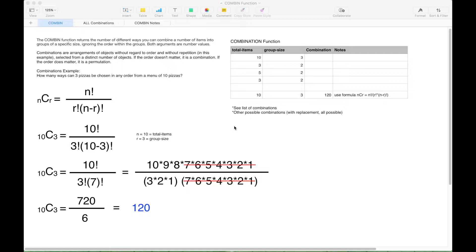A couple notes before we get started. The COMBIN function returns the number of different ways you can combine a number of items into groups of a specific size, ignoring the order within the groups. Both arguments are number values. Combinations are arrangements of objects without regard to order, and in this example, without repetition, selected from a distinct number of objects. If the order doesn't matter, it is a combination. If the order does matter, it is a permutation.